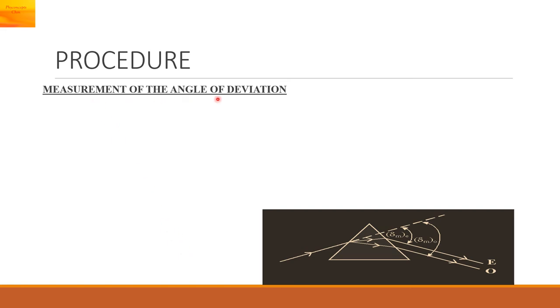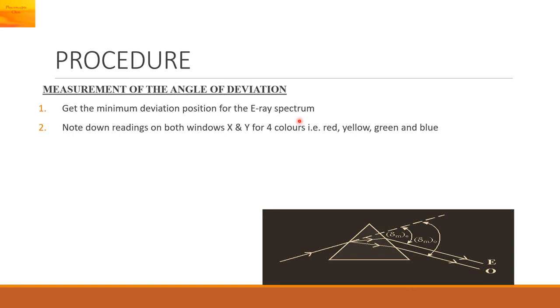Now we will measure the angle of deviation. Get the minimum deviation position for the extraordinary ray spectrum. Note down the readings on both windows X and Y for four colors i.e. red, yellow, green and blue. Remove the double refracting prism and take the direct reading on both the windows. Repeat steps from one to three for ordinary ray spectrum for the same colors.